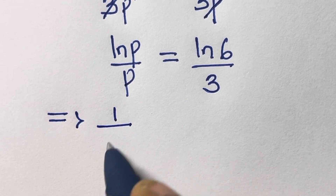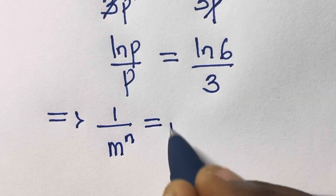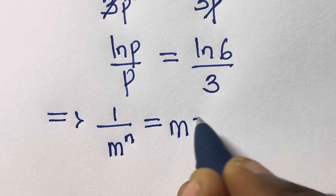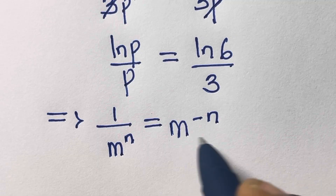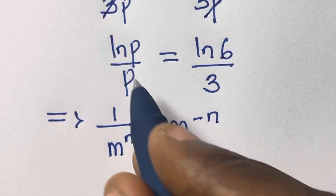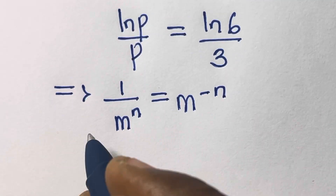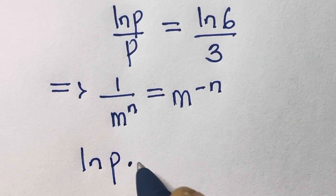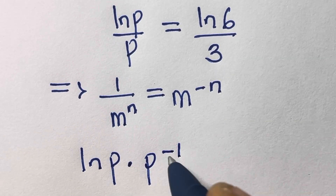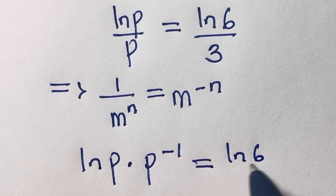Now note that from the law of indexes, 1 divided by m^n equals m raised to power minus n. Applying this, ln(p)/p becomes ln(p) multiplied by p raised to power minus 1, equals ln(6) divided by 3.